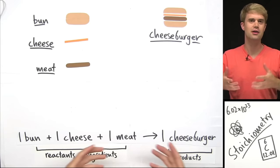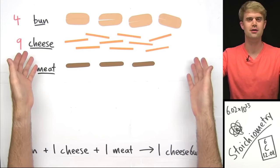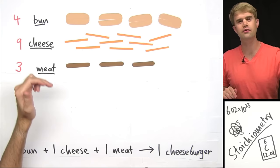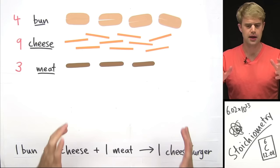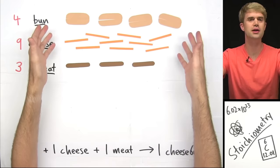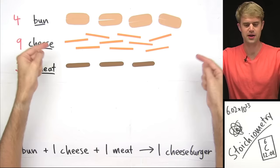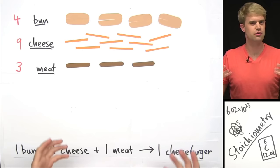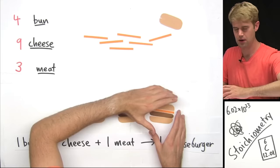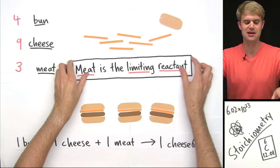Now we've got our recipe. To do some cooking, we need to get some ingredients. Let's rummage around in the refrigerator and see what we can find. You'll notice we have different numbers of each ingredient — this happens a lot in cooking, and it also happens a lot in chemical reactions. You often start with different amounts of each reactant. Limiting reactant comes into play when we ask: given these different numbers of ingredients, what is the greatest number of cheeseburgers that we can make? We have four buns, nine slices of cheese, but only three pieces of meat, so we can really only make three cheeseburgers. Here's the first, second, and third cheeseburger.